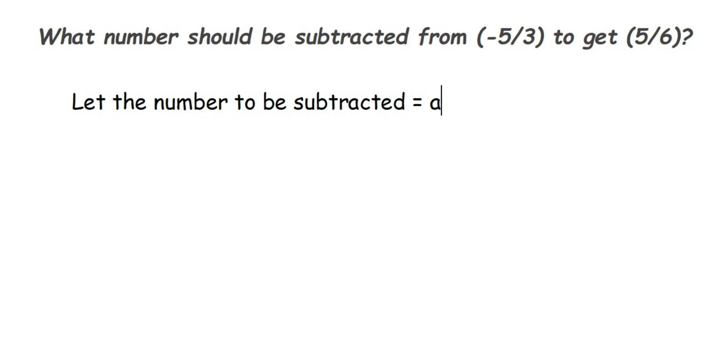When I frame it, from -5/3 what number has to be subtracted, we have taken as 'a', so -5/3 - a = 5/6. I have seen many students writing a - 5/3, but that's subtracting 5/3 from 'a', so the meaning is changing. Don't do that. This will be the actual equation.